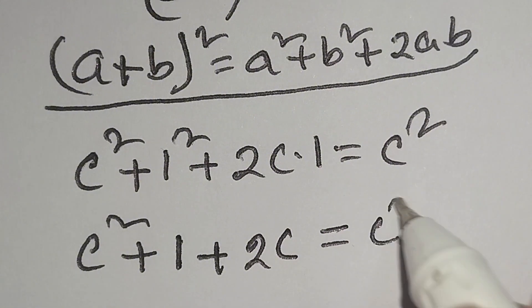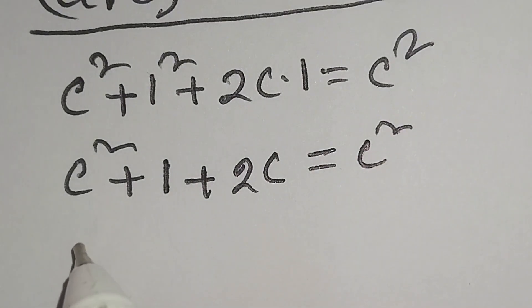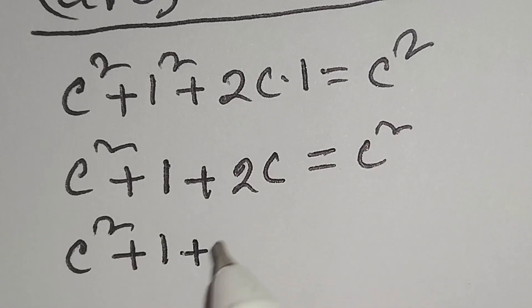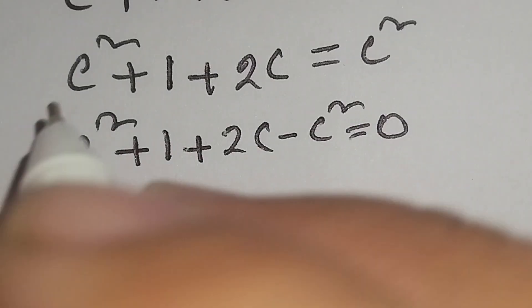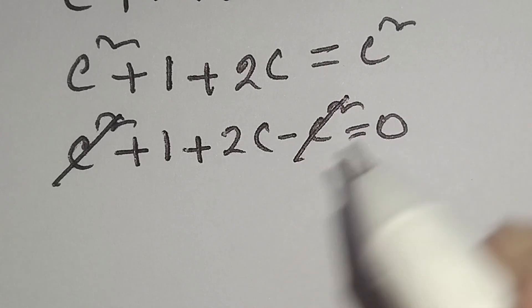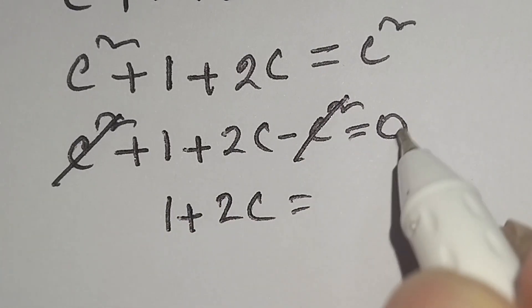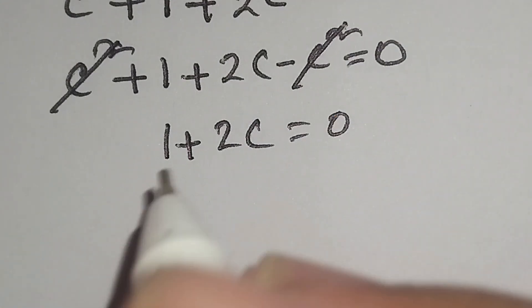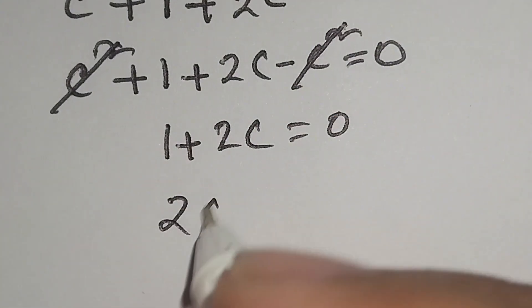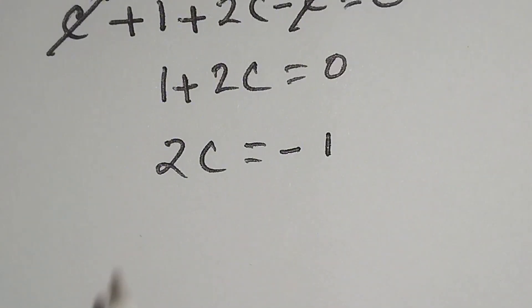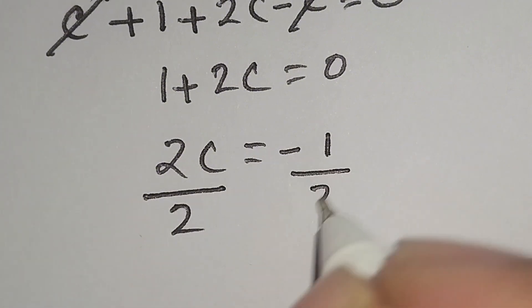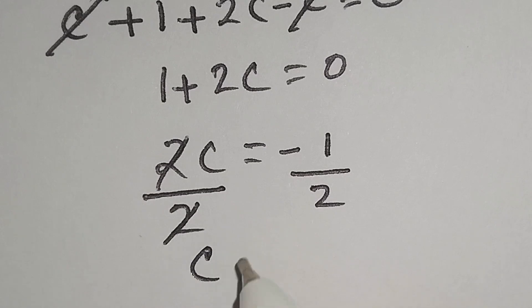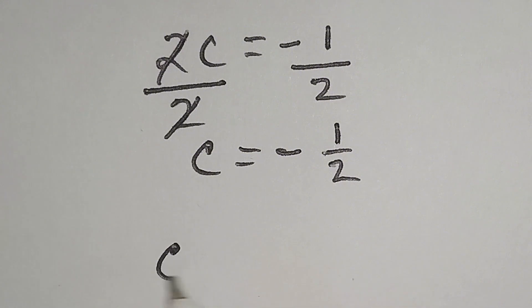Now we'll move this c squared to the left side, so we can write: c squared plus one plus two c minus c squared equals zero. The positive c squared cancels with the negative c squared, giving us one plus two c equals zero. Now we'll move this one to the right side, so two c equals minus one. We'll divide both sides by two, giving us two c over two equals minus one over two. The two cancels out.